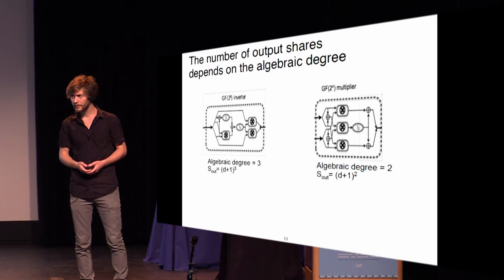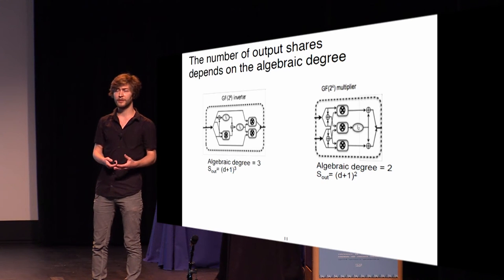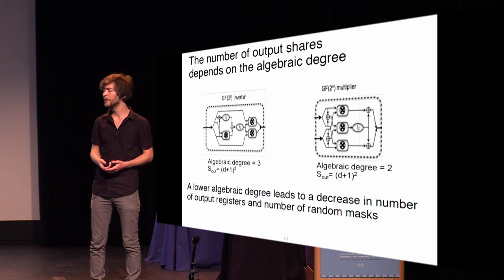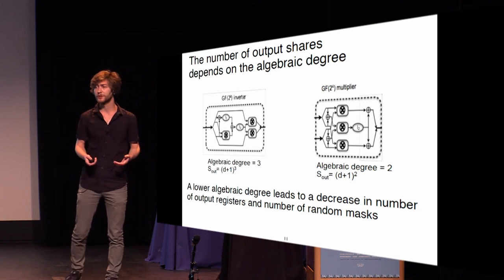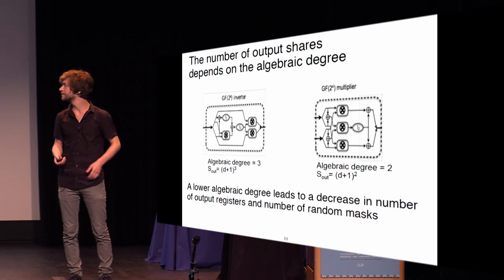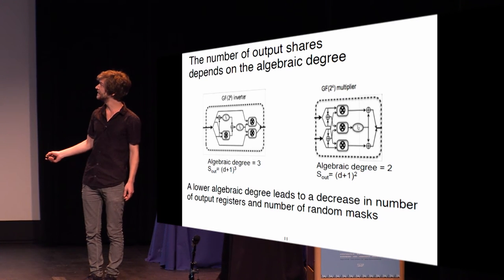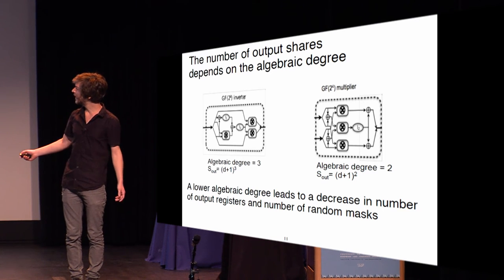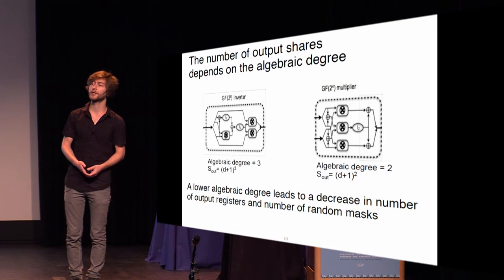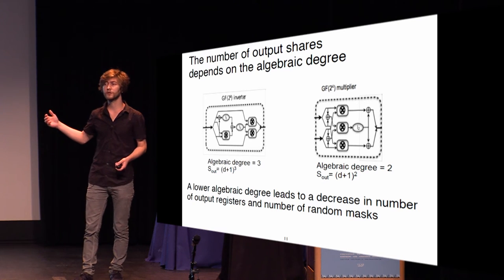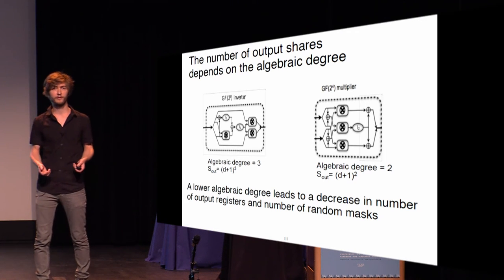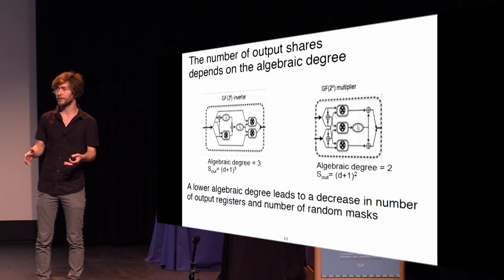The number of output shares we have immediately influences the number of random bits required and the number of output registers, so it's also related to area. If we share the Galois Field 16 inverter in one go, we require the cube of D plus one output shares. If we mask the multiplier instead — which has algebraic degree 2 — we only require the square of D plus one output shares.